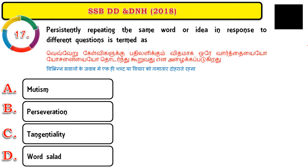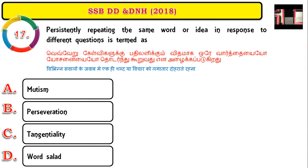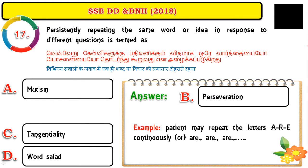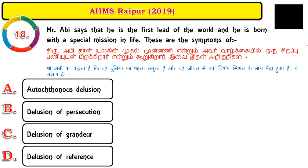Question number seventeen: persistently repeating the same words or ideas in response to different questions is termed perseveration. Here, the person takes one particular word and repeats it for every question asked. For example, if you ask the patient's name or what they had for breakfast, the answer is always 'yes' — the same word repeated for every question.